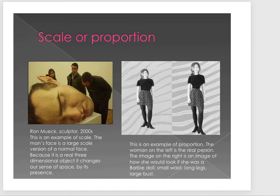Because these sculptures are huge, you interact with them very differently than you would with a sculpture at an actual human scale. Because of this three-dimensional presence, the feeling of novelty is really reinforced and the feeling of distortion happens. On the right, there's an example of proportion dealing with a woman whose image on the left is her actual unaltered photograph, while the image on the right is altered to appear more like a Barbie doll.